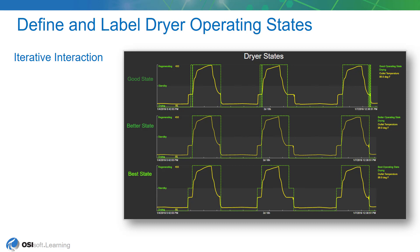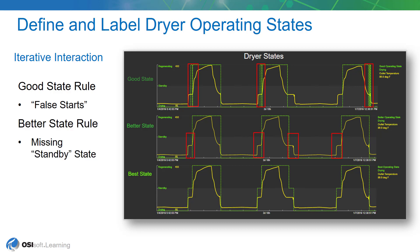We're going to start with the good state rule, which will give us a few problems — some static or false starts in our evaluation. So we're going to revise the first one to create the better state rule, which gives us a much more definitive start and end to the regenerating cycle. However, we'll recognize there are other places where we actually have a third state, which we're going to call the standby state. Finally, we'll create an analytic that covers all possibilities — we'll call that the best state, and we'll use that one for the rest of the lessons in the course.